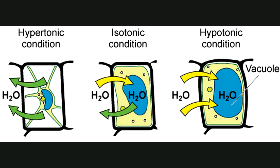Now let's look at the same situation with a plant cell. The big difference is that an animal cell doesn't have a cell wall, but a plant cell does, so the plasma membrane won't rupture. In a hypertonic condition, water moves out and the cytoplasm shrivels in — the vacuole loses a lot of water. In a plant cell this is called plasmolysis, and it gives plants a really wilted look.